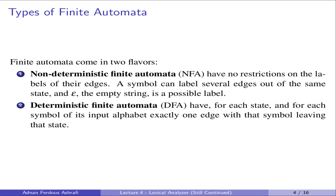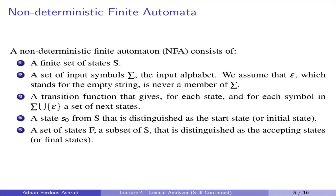The second type is deterministic finite automata, or DFA. For each symbol of the input alphabet, there is exactly one edge with that symbol leaving each state — one unique next state. Importantly, in DFA there are no epsilon inputs and no null inputs. DFAs are more practical in the context of finite automata.